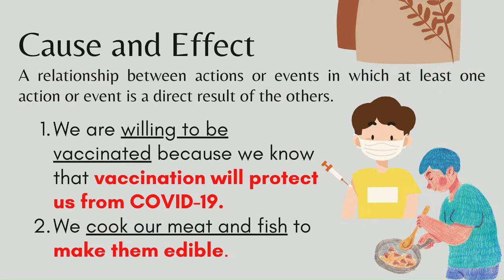Cause and effect is a relationship between actions or events in which at least one action or event is a direct result of the other. For example, we are willing to be vaccinated because we know that vaccination will protect us from COVID-19. The cause is that vaccination will protect people from COVID-19, and the effect is that people are willing to be vaccinated.